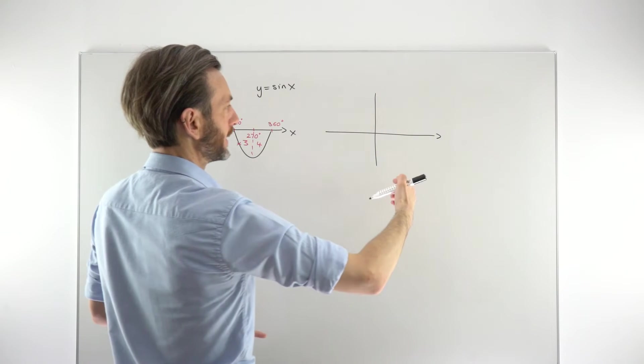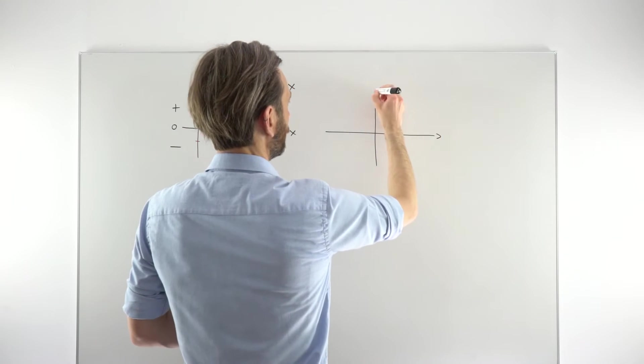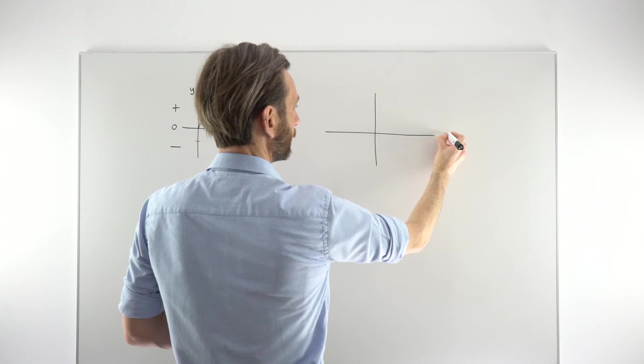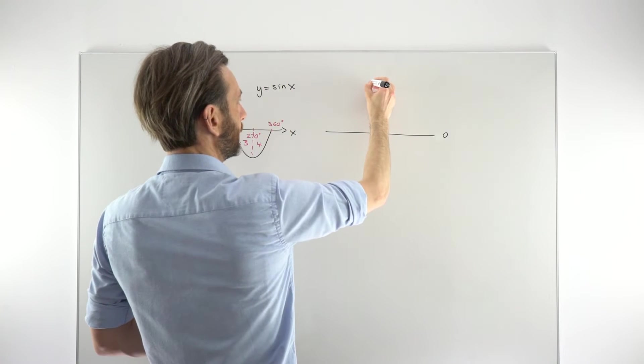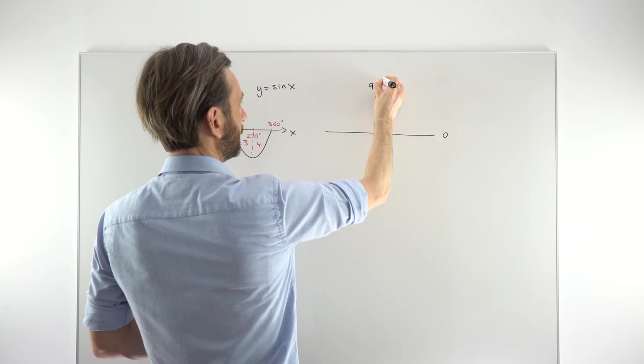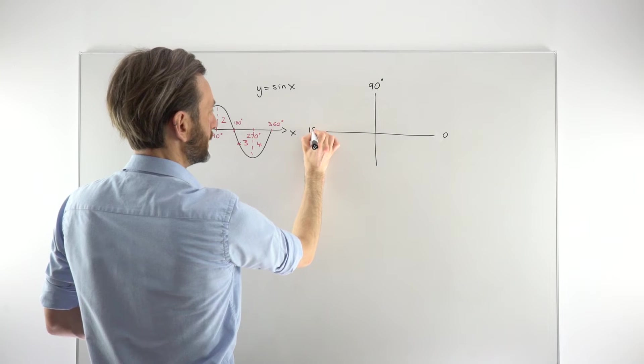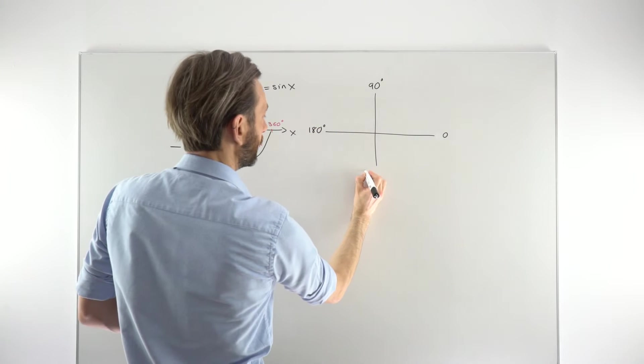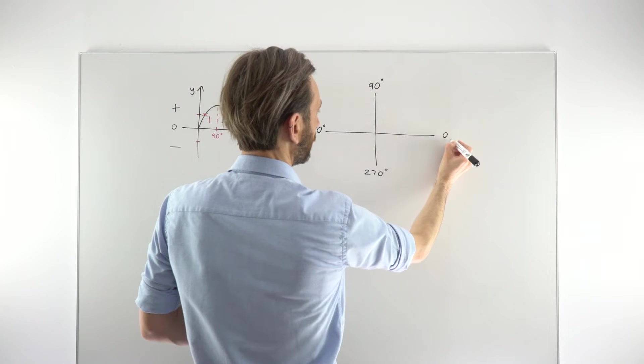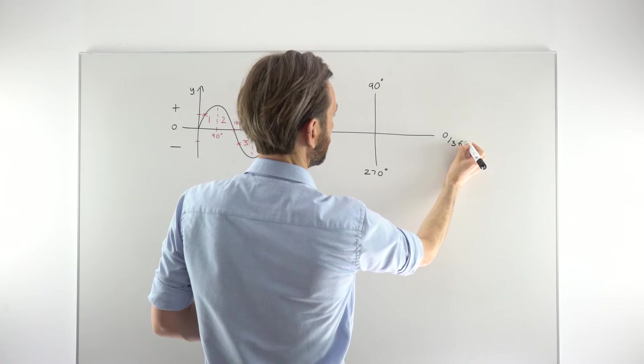We start here at 0 and we go back in 90-degree chunks. So this is 90 degrees. This is 180 degrees. And then carrying on like that, 270. And then back for one full cycle to 360 degrees.